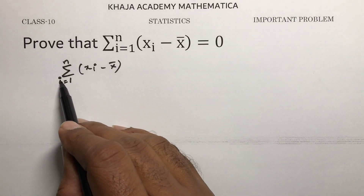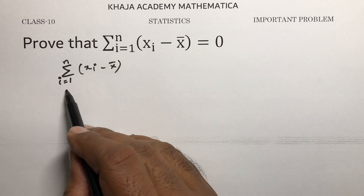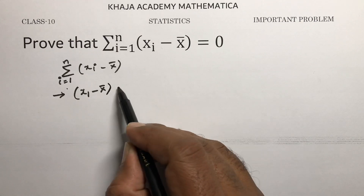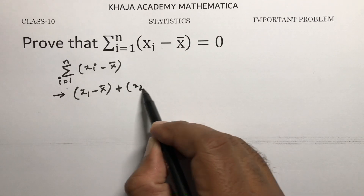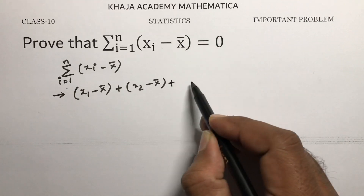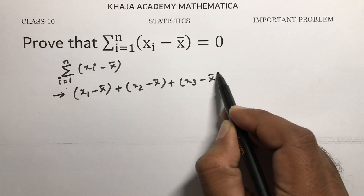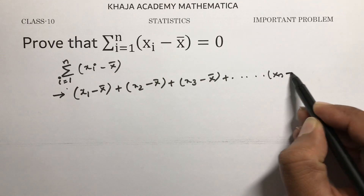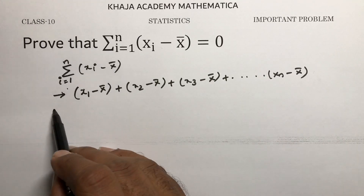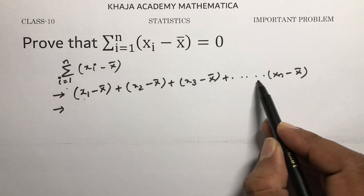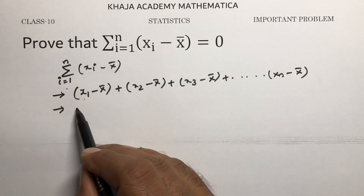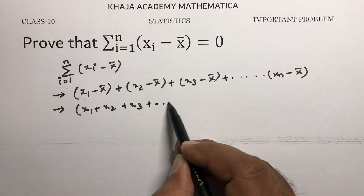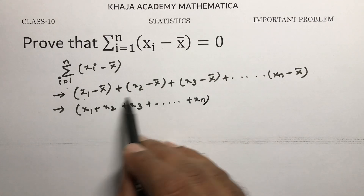Expanding the summation, since i goes from 1 to n, we get: (X₁ minus X̄) plus (X₂ minus X̄) plus (X₃ minus X̄) and so on up to (Xₙ minus X̄). Now write all the first terms together: X₁ plus X₂ plus X₃ plus so on Xₙ.